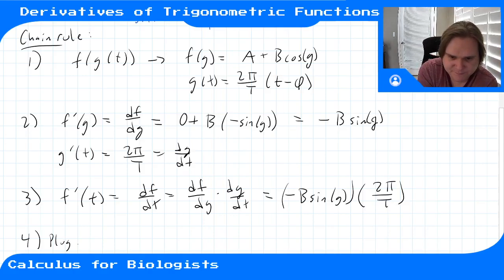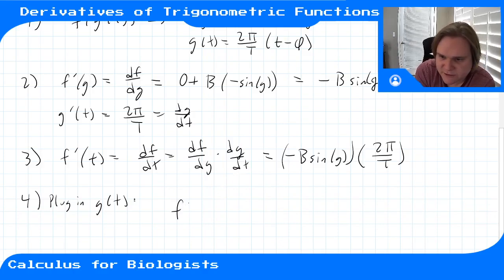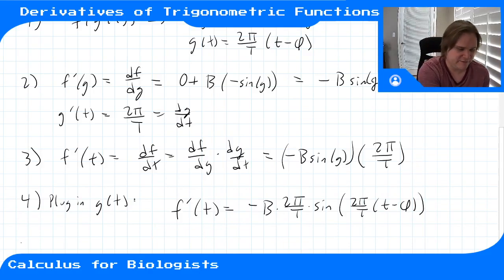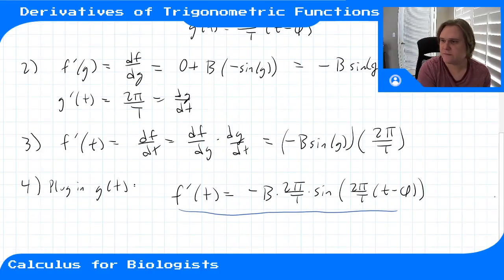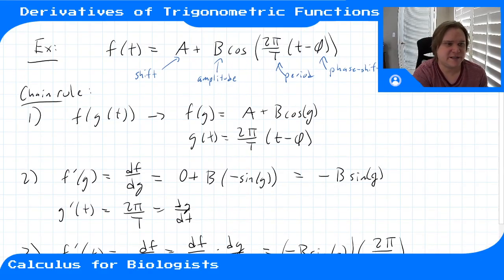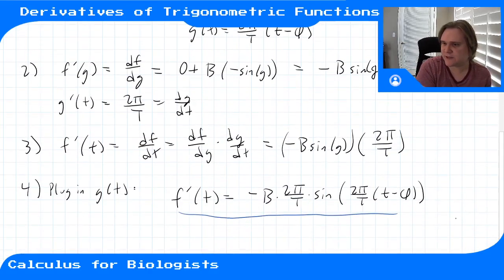Step 4 says plug in g of t to get a nice function of time. So f prime of t equals minus b times 2π over T times sine of (2π/T times t minus b). Comparing to the original function a plus b cosine of (2π/T times t minus b), the cosine has become minus sine, the shift is gone, the amplitude has an extra period factor, but the inside is basically the same.